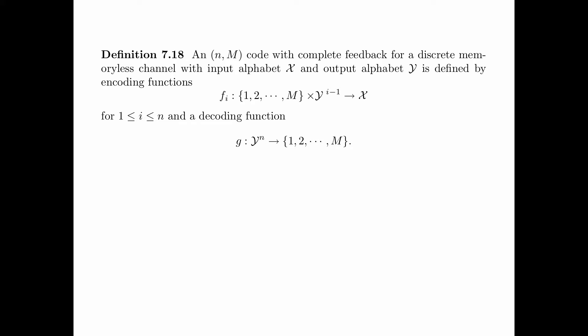Definition 7.18 is the definition of a feedback code. An (n,M) code with complete feedback for a discrete memoryless channel with input alphabet X and output alphabet Y is defined by encoding functions f_i from the message set {1,2,...,M} times Y^(i-1) to X, where i is from 1 up to n, and a decoding function g from Y^n to the message set {1,2,...,M}.